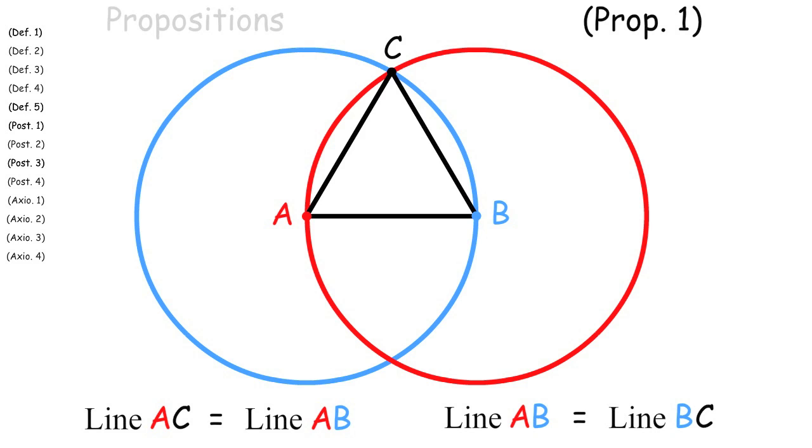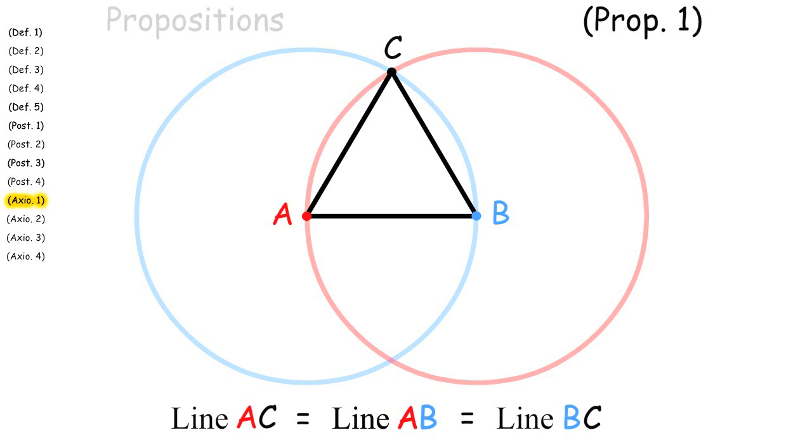So we have line AC is equal to line AB and line AB is equal to line BC. With these two facts we can use axiom 1 to show that all three lines are equal.